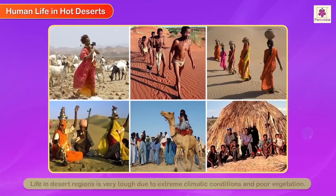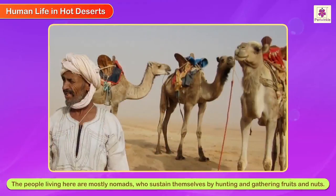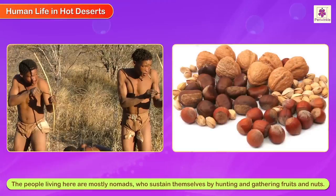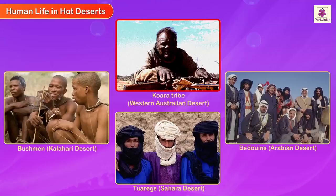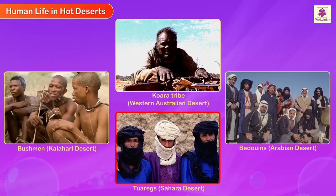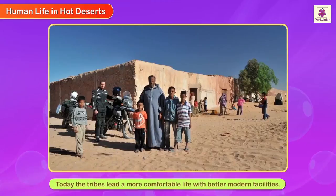Human life in hot deserts: Life in desert regions is very tough due to extreme climatic conditions and poor vegetation. The people living here are mostly nomads who sustain themselves by hunting and gathering fruits and nuts. Primitive tribes include the Bushmen in the Kalahari Desert, the Kuara tribe in the Western Australia Desert, the Bedouins in the Arabian Desert, and the Tuaregs in the Sahara Desert. Today, these tribes lead a more comfortable life with better modern facilities.